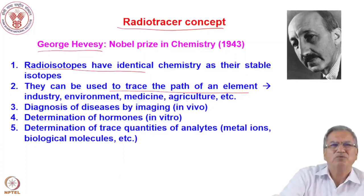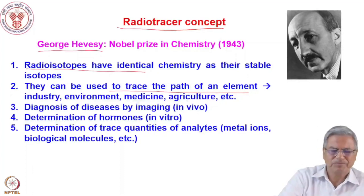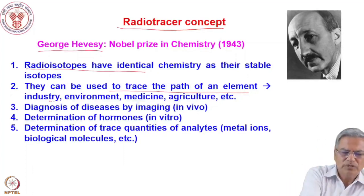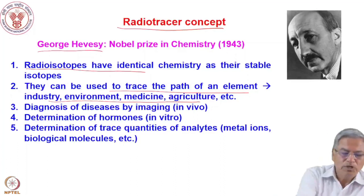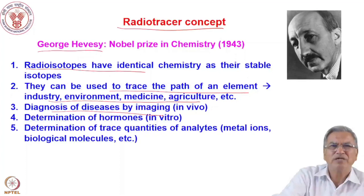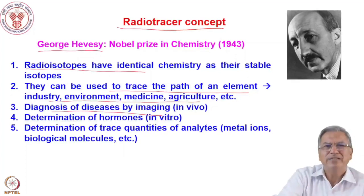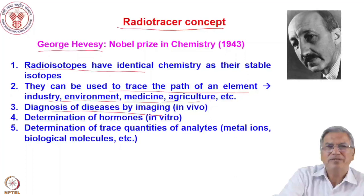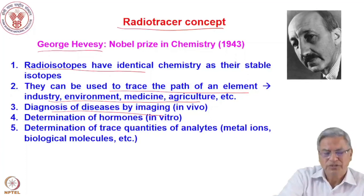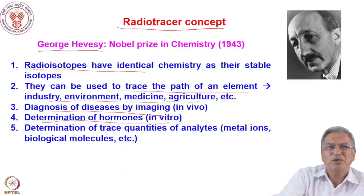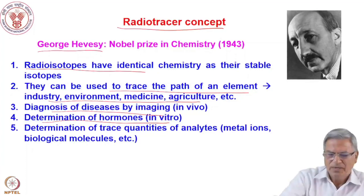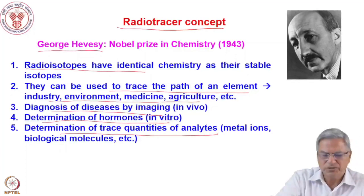From outside, you can trace the path by detecting radiation. They can be used in industry, environment, medicine, and agriculture to trace the path of an element. You can use them for diagnosis of diseases by imaging — making tracers go to a particular organ and detecting radiation emitted from outside the human body. You can take a gamma image using gamma ray counters, similar to X-rays. They are also used in vitro for determination of compounds like hormones in the body.